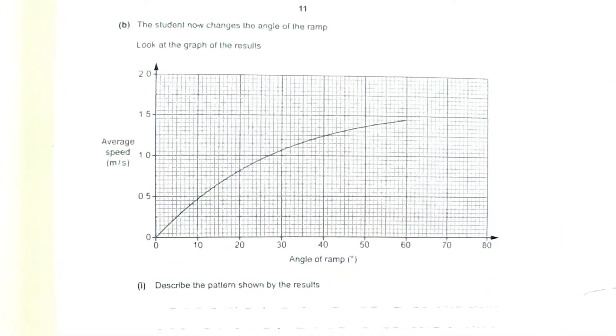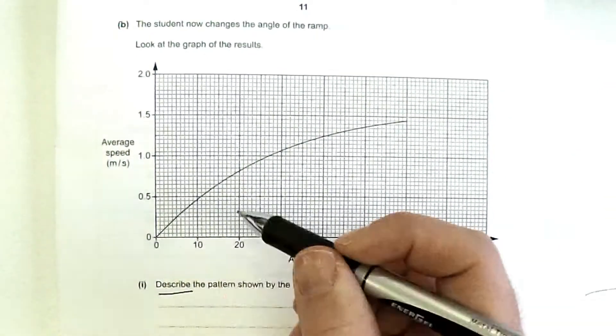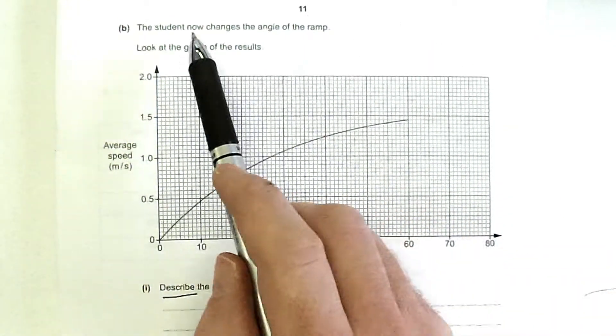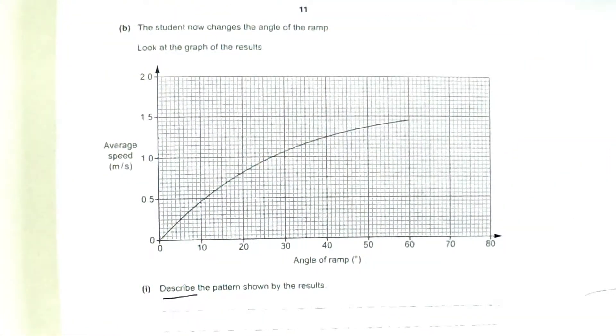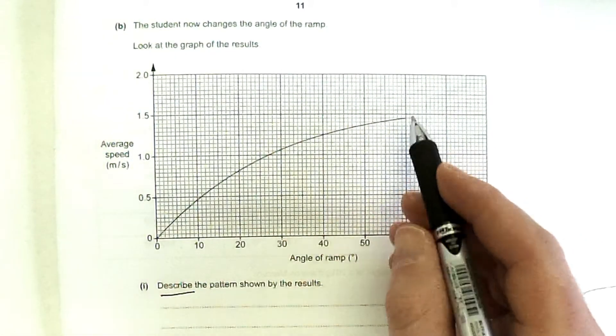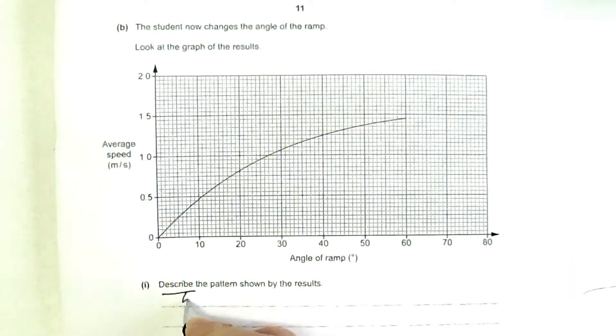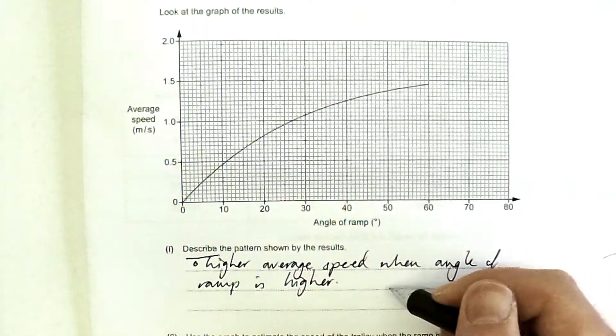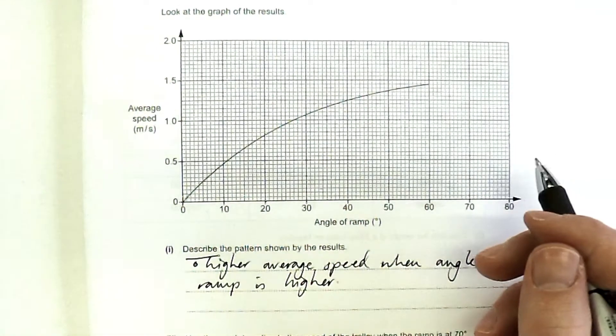Okay, describe the pattern the results showed. So here's the average speed versus the angle of the ramp. So basically they changed the angle of the ramp and look at the graph of the results. Well, describe the pattern. It's clearly a higher average speed, isn't it? When the angle of the ramp is higher. Okay, well, is that going to give me two marks? Higher when the angle of the... I don't think so, actually.